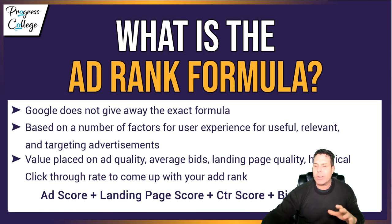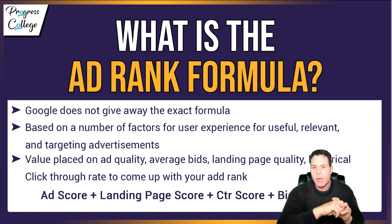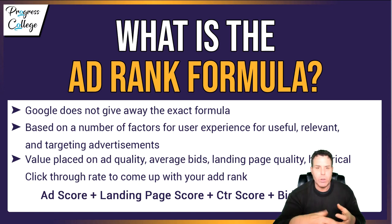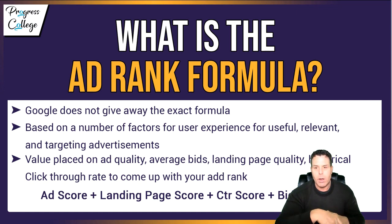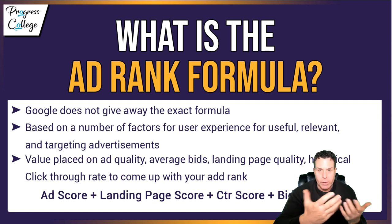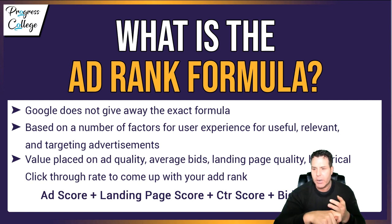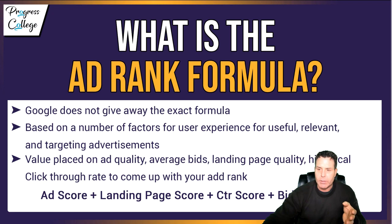What is the ad rank formula? Nobody knows the exact formula — maybe the developer who built the algorithm at Google knows, but that's probably the only person on the planet. It's based on a number of factors for useful, relevant, and targeted advertisements. Keep in mind that Google is similar to Facebook: it's all about the user experience, and they're trying to give the user the best possible experience. If the user is searching for something, Google is going to try to put the most relevant ads in front of that person to solve their problem. Value is placed on ad quality, average bids, landing page quality, and historical click-through rate to come up with your ad rank. Basically: ad score + landing page score + CTR score + bid = your ad rank.